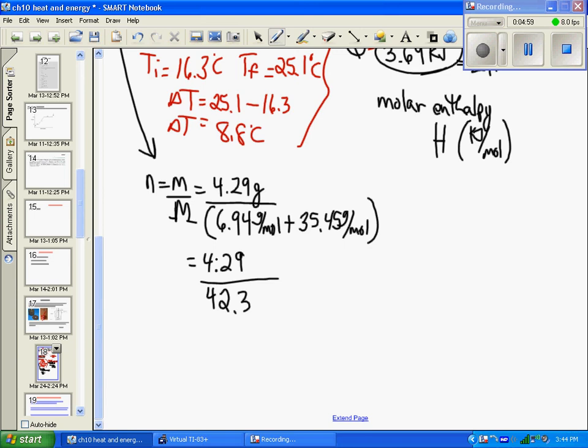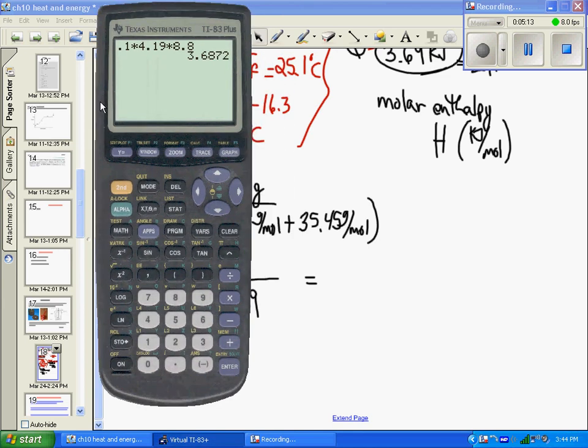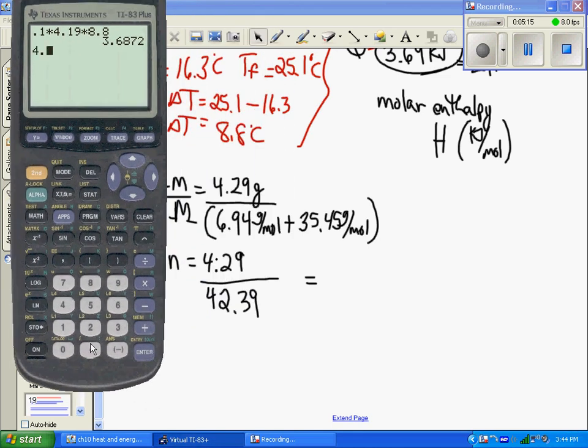Dividing this out: 4.24 divided by (6.94 plus 35.45). Working it out, you get 0.101 moles.